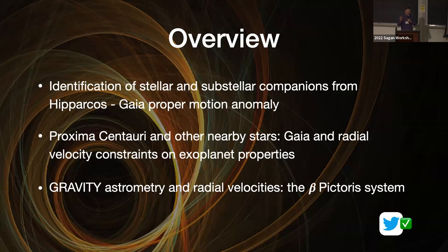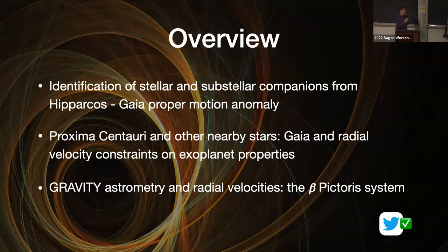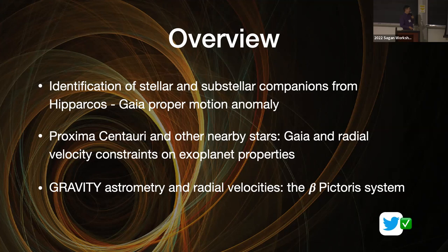That is the proper motion anomaly — not an acceleration, more a difference in velocity — and how we can identify stellar and substellar companions using this indicator. Then I will present some applications to individual stars, in particular Proxima Centauri, one of my favorites, and also other nearby stars and what we can tell about their exoplanets.